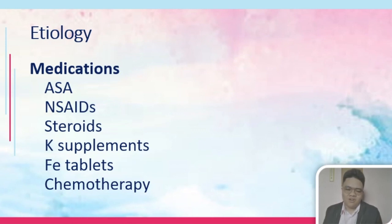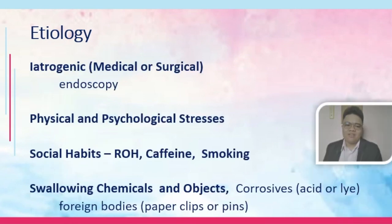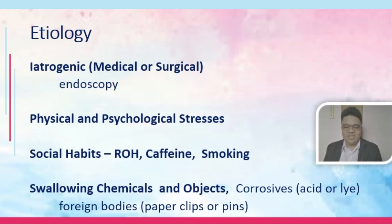We also have chemotherapeutic agents — drugs used for cancer. As we know, the drugs used for cancer damage both the normal and abnormal cells of the body, and one consequence is gastritis. Other etiology could be iatrogenic — caused by the medications or surgery the patient underwent; one example is endoscopy, which carries a possibility of gastritis. Then we have physical and psychological stress — stress ulcers can lead to gastritis.